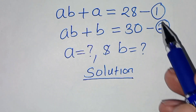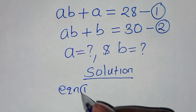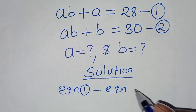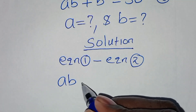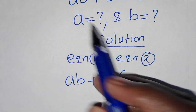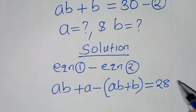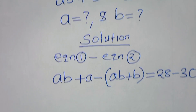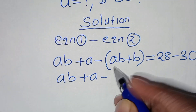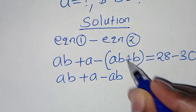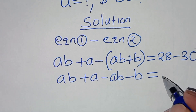The first thing to do here is subtract equation 1 minus equation 2. So this implies that we have ab + a, subtract equation 2 which is ab + b, this is equal to 28 minus 30. So we have ab + a minus ab minus b, this is equal to 28 minus 30, which is minus 2.